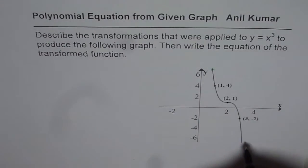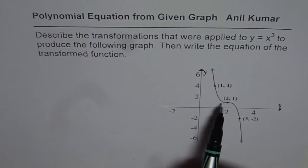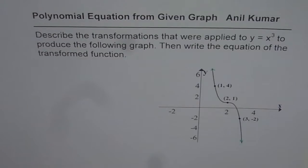We are also given three points. One is (1, 4). The other one is (2, 1). And then we have (3, -2).